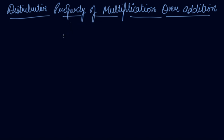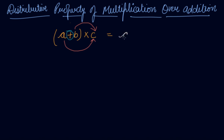The other property is the distributive property of multiplication over addition. In this property, we get both addition as well as multiplication. This property says (a + b) × c = a × c + b × c. C is the common number outside the brackets — multiply c with a first, then multiply c with b, and then add the two results.